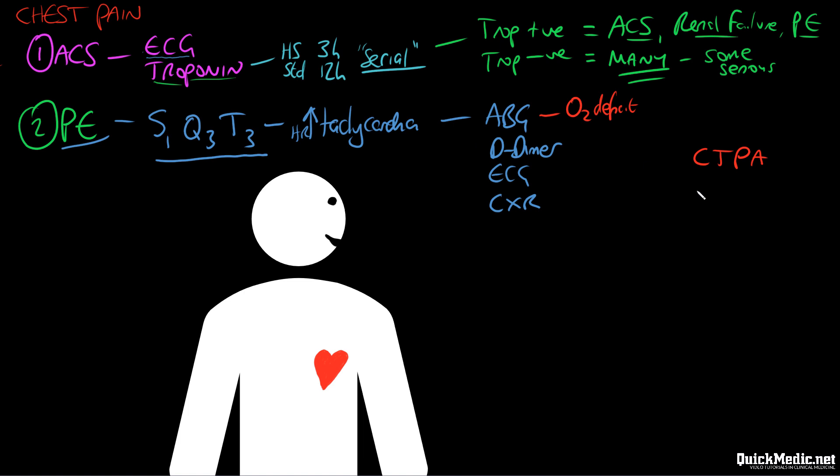The Wells criteria includes: clinical signs and symptoms of a DVT (3 points); is PE the primary diagnosis or equally as likely (3 points); heart rate greater than 100 (1.5 points); immobilization for at least three days or surgery in the previous four weeks; previous PE or DVT; hemoptysis; and malignancy with treatment within six months or palliative status. The severity scoring will advise you whether to proceed with a D-dimer or a CTPA — so it's worth looking up the Wells criteria score and mentioning it in your exam.